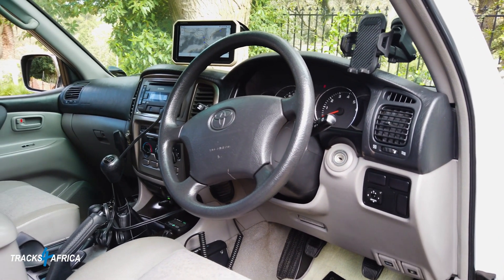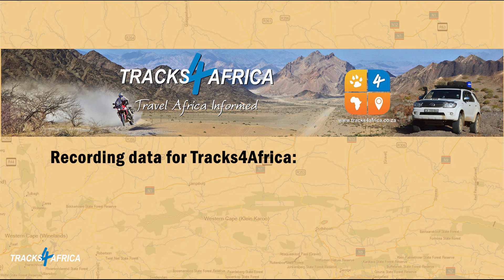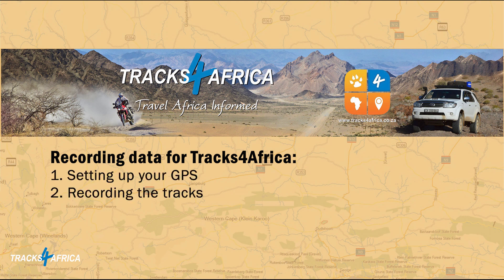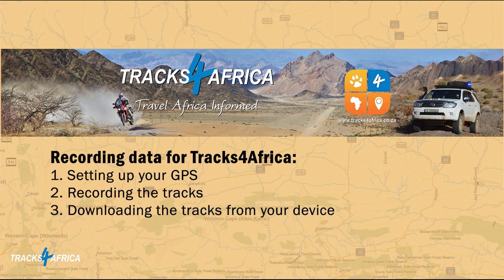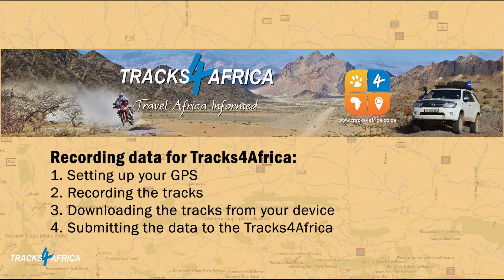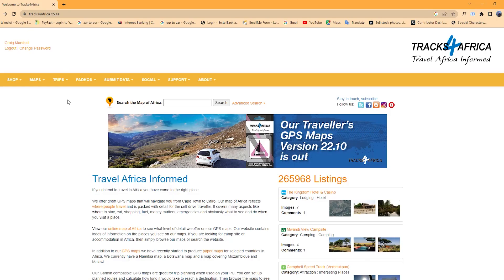The entire process has four main steps: Step 1 - setting up your GPS; Step 2 - recording the tracks; Step 3 - downloading the tracks from your device to your PC or Mac; and Step 4 - submitting the data to Tracks for Africa.